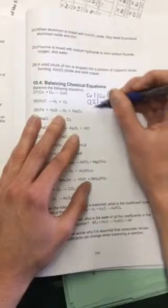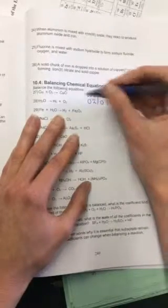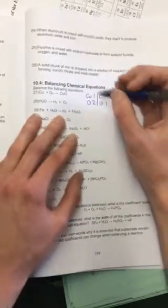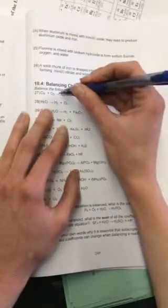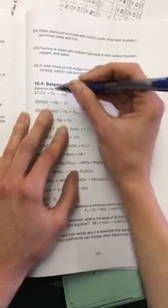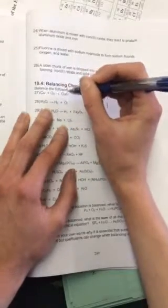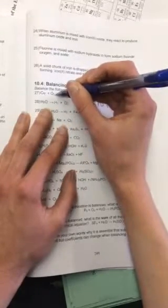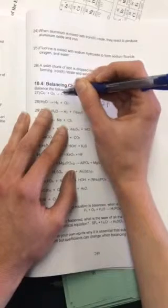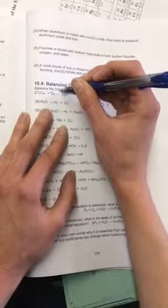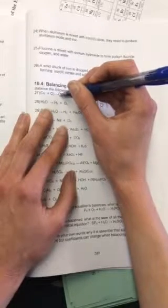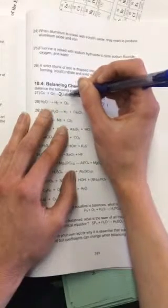So the only way you can change the numbers of elements is to add coefficients. A coefficient is a number that goes in front of one of these molecules. You cannot change the subscripts. That's these little numbers right here. You can't add numbers in between so I can't add a two in front of this oxygen. I can only add a two in front of here.